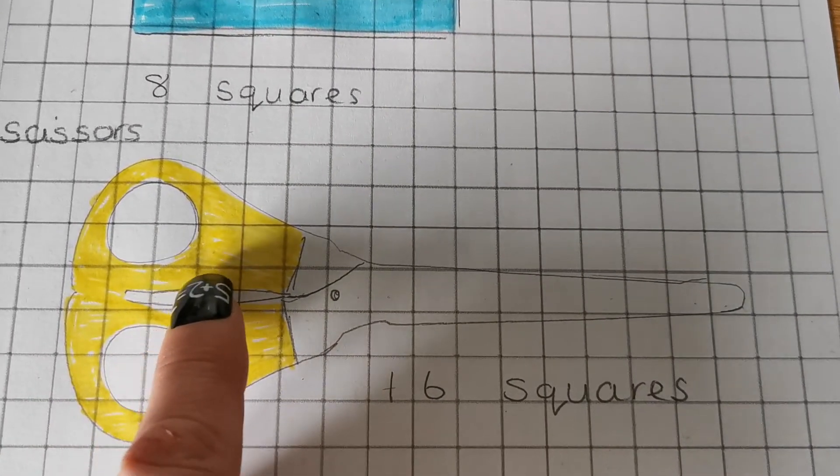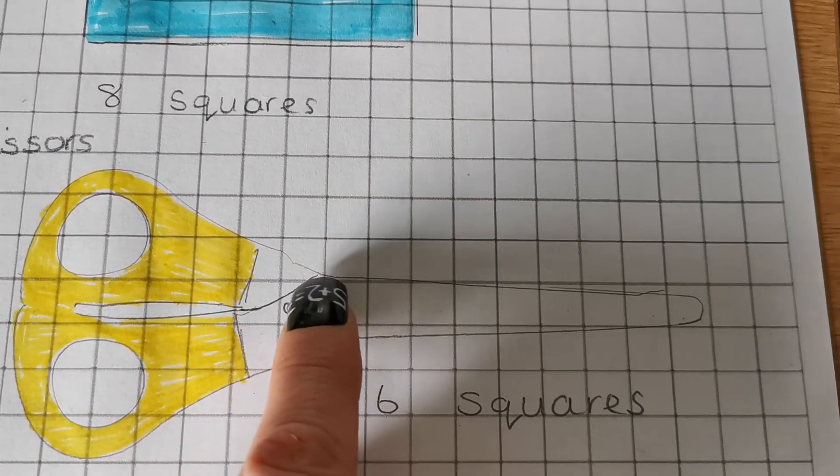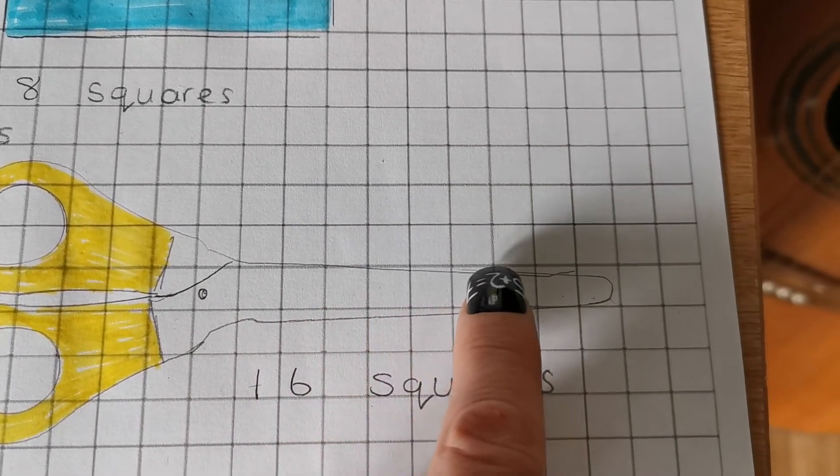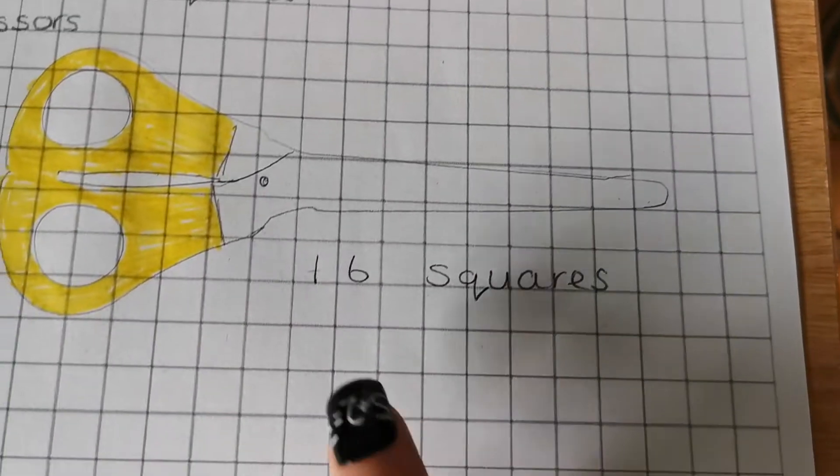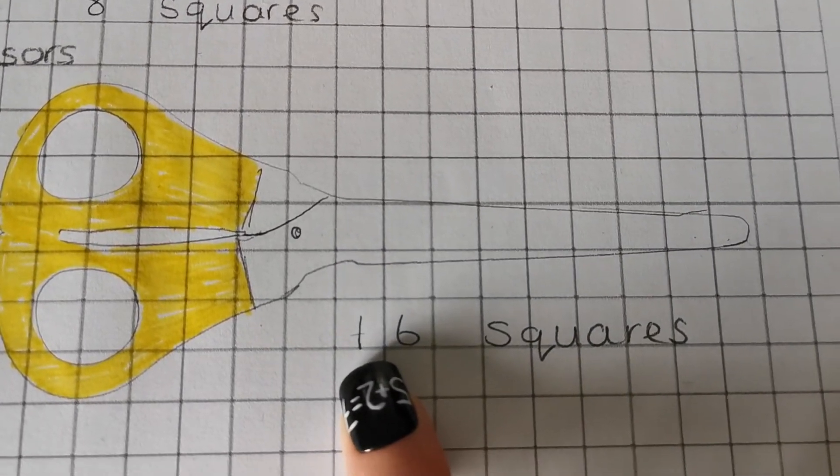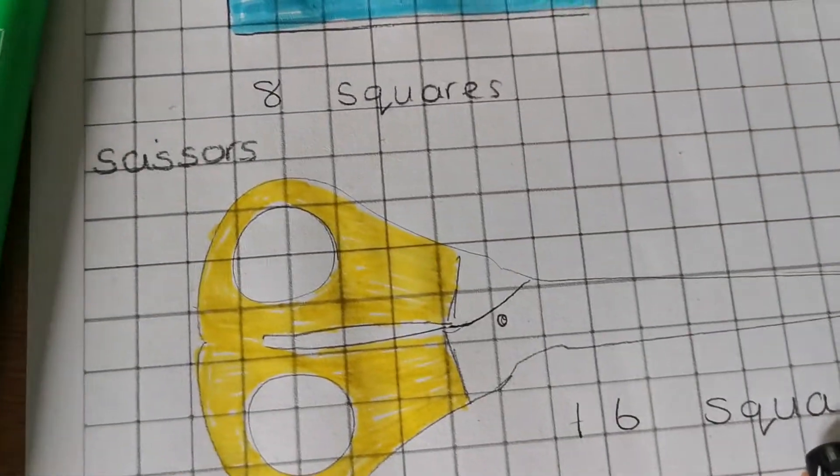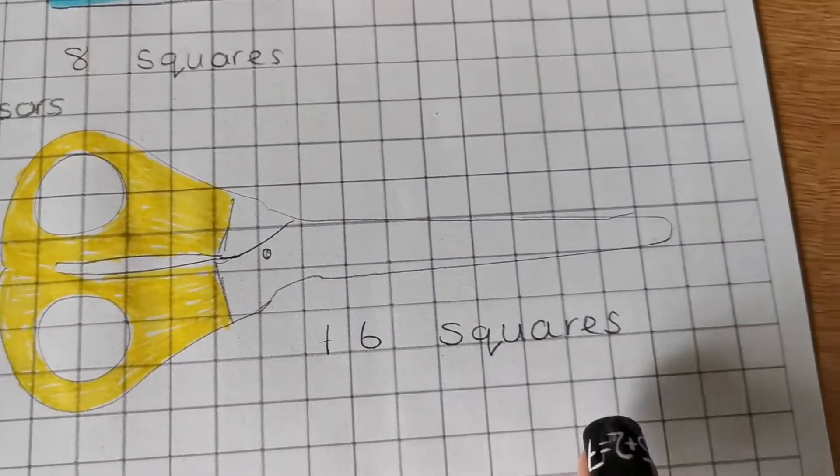One, two, three, four, five, six, seven, eight, nine, ten, eleven, twelve, thirteen, fourteen, fifteen, sixteen squares. So I wrote it underneath. Sixteen squares. So the length of the scissors is sixteen squares.